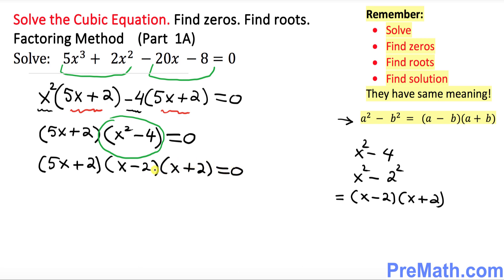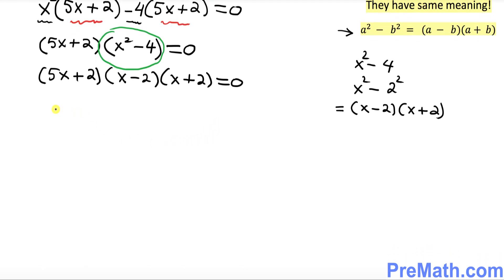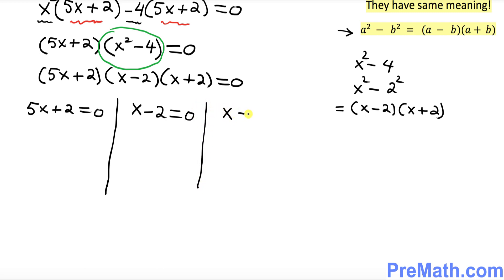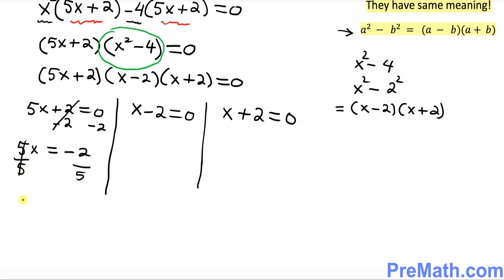Now since all these factors are equal to 0, we can split them up easily. So we get: 5x plus 2 equals 0, and x minus 2 equals 0, and x plus 2 equals 0. Taking the first equation, subtract 2 from both sides — the positive 2 and negative 2 cancel — giving 5x equals negative 2. Dividing both sides by 5, we get x equals negative 2 fifths.